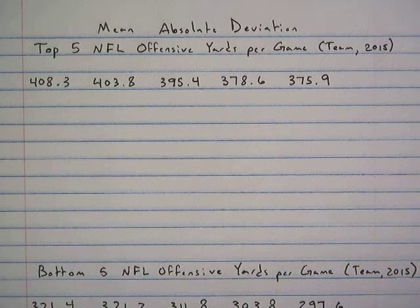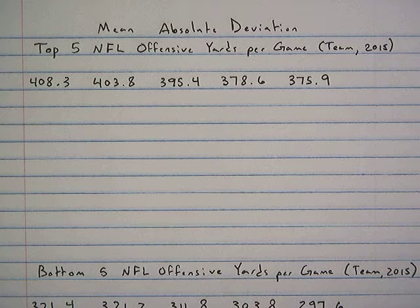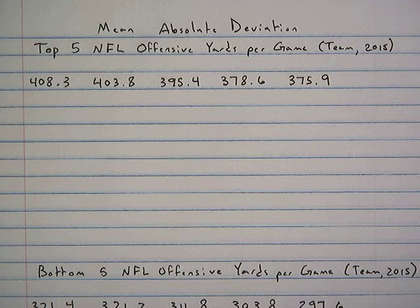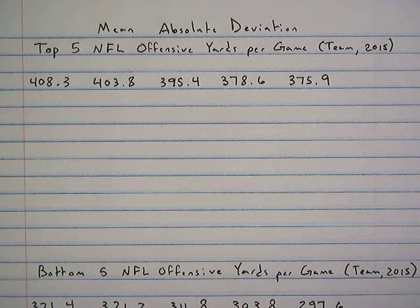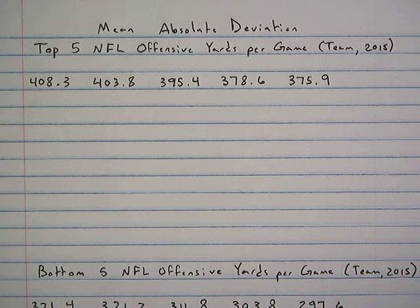The mean absolute deviation of a data set describes the spread of that data. It calculates the average distance that the data is from the mean. Today I'm going to show you how to find the mean absolute deviation between two different data sets in order to compare the two sets.